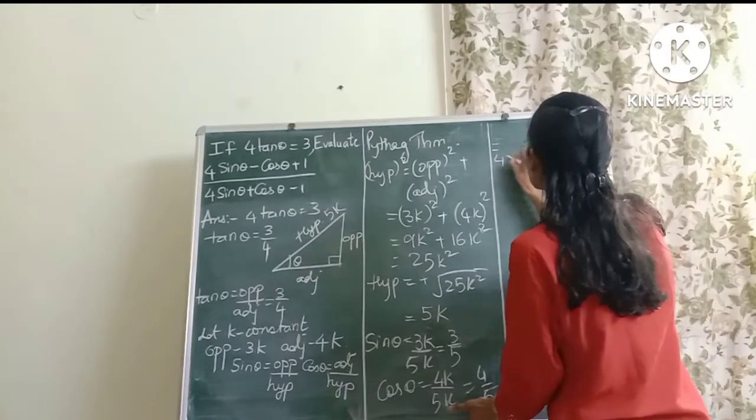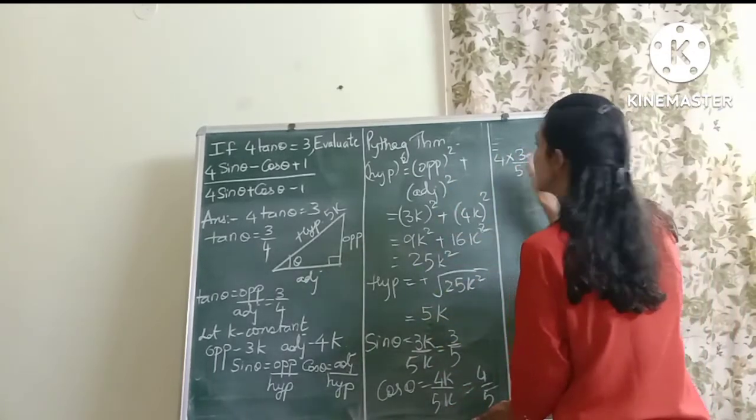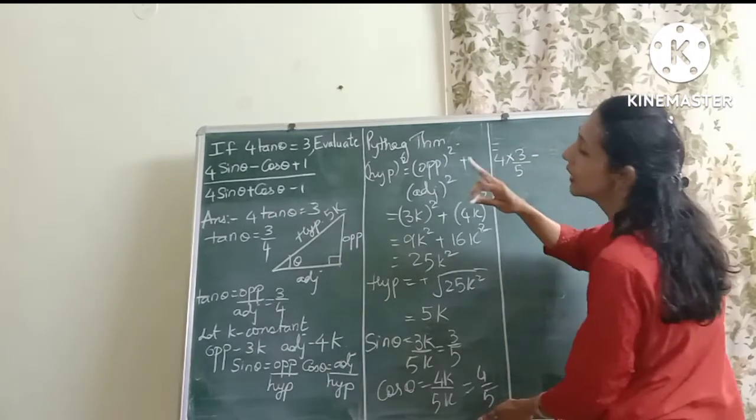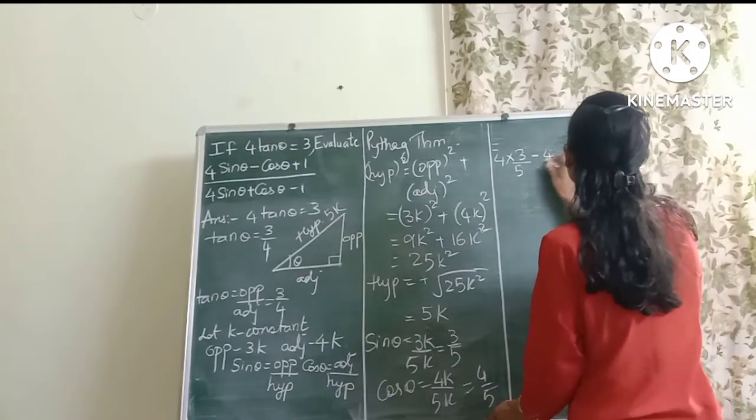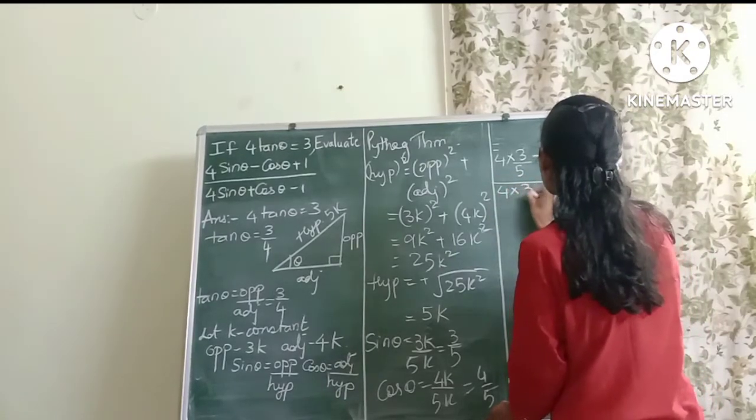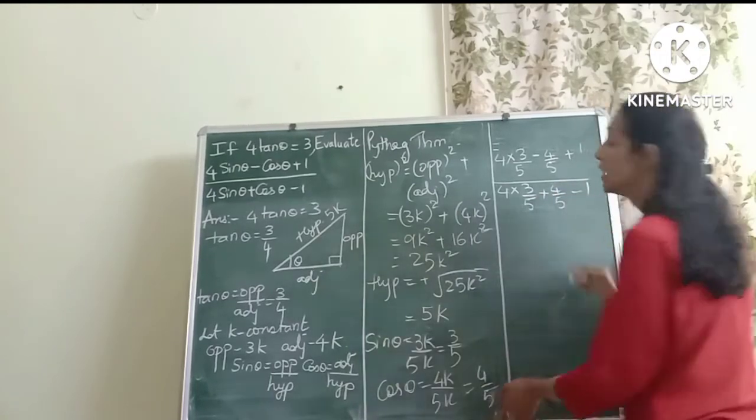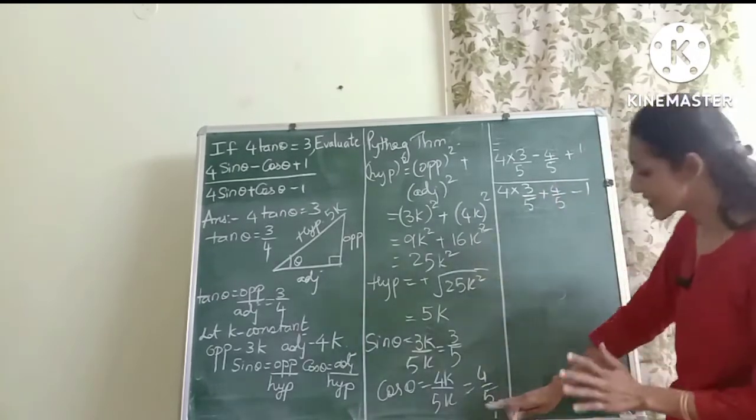So let's put it in that expression. This is the last part of the question. So 4 into sin θ will be, yes, 3 by 5. Be very careful while copying the signs, especially.